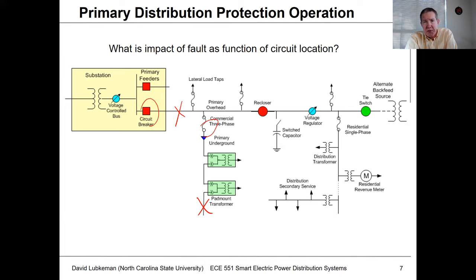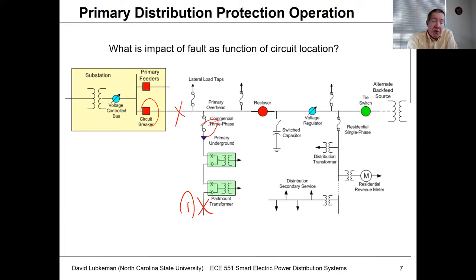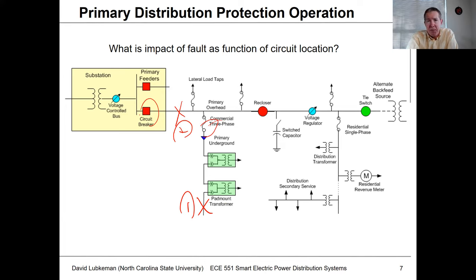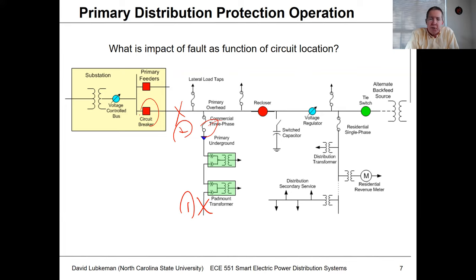What's the difference between these two events? In the first event, I would just lose the customers below that fuse. But if I had a fault at location number two and that circuit breaker trips open and stays open, then all the customers on the circuit are going to be out. So we're going to have these different fault events, but depending on the location of the fault event, it's going to have a different impact in terms of the number of customers that are out.